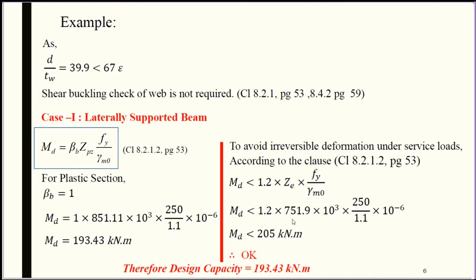After keeping all values in the formula: MD = 1 × 851.11 × 10³ × 250 / 1.1 × 10⁻⁶ = 193.43 kilonewton meter.